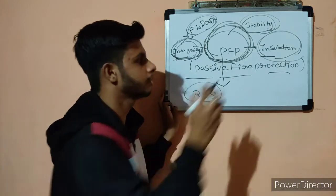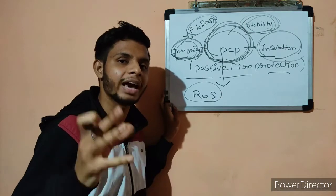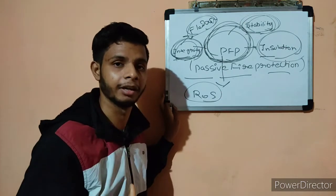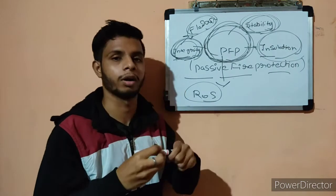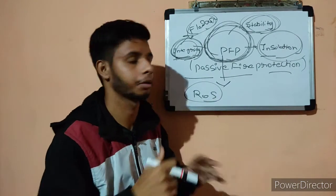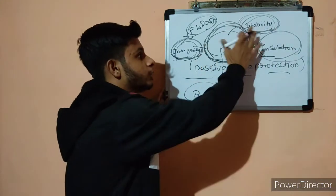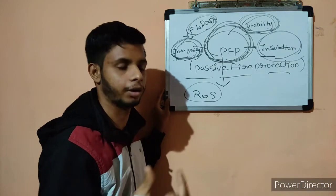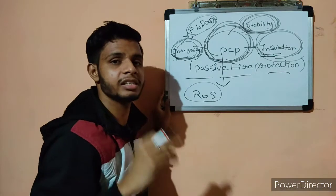Second is stability. Stability means if you are using any passive fire protection material it should withstand — it should have reliability. It doesn't mean that when fire occurs it will collapse. For example, if a door used in a fire-rated application is exposed to fire, it should not collapse. Walls and doors used as passive fire protection should have the capacity to withstand fire.